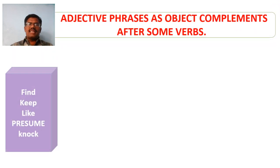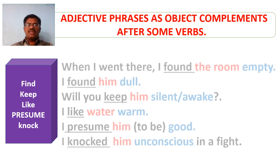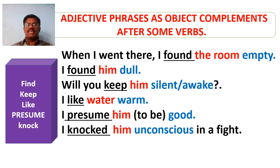Here is another list of verbs with which adjective phrases can be used as object complements. These verbs — find, keep, like, presume, knock — are used in sentences. The verbs are underlined, objects are marked in red ink, and the adjective phrases used as object complements are marked in blue ink. They include: empty, dull, silent, awake, warm, good, unconscious.